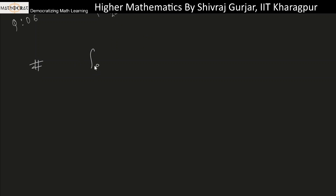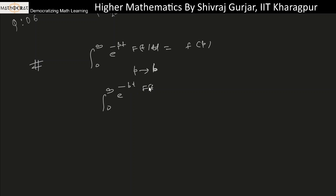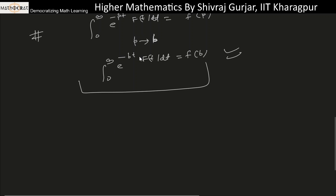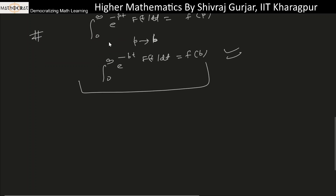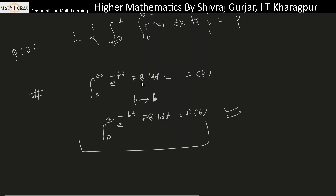The concept is: we know that the integral from 0 to infinity of e^(-pt)·f(t) dt is the Laplace transform of f(t), denoted by small f(p). So if p is replaced by a constant b, then the integral from 0 to infinity of e^(-bt)·f(t) dt equals f(b). Using this, we can evaluate integrals, provided the integral converges — that is understood by default.